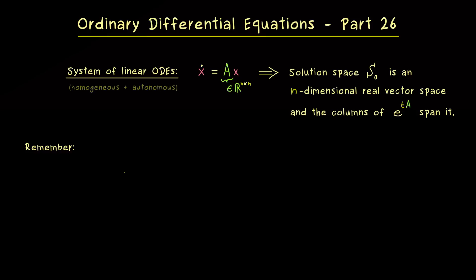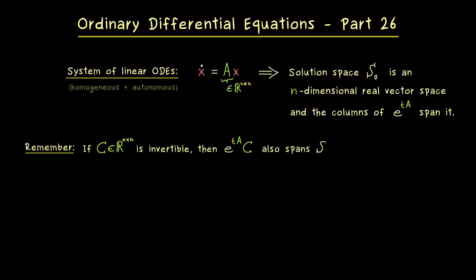We don't need to explicitly calculate the matrix exponential — we just need to know what the columns span. If we multiply our matrix exponential by an invertible matrix C from the right-hand side, we get different combinations of the columns but don't change what they span, so we don't change our solution space S0. It's important that C is invertible and multiplied from the right. This fact is really helpful, as we will see with our two-dimensional cases.